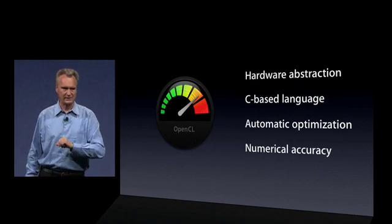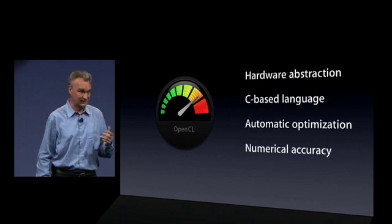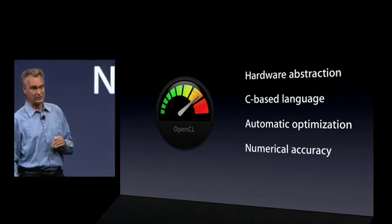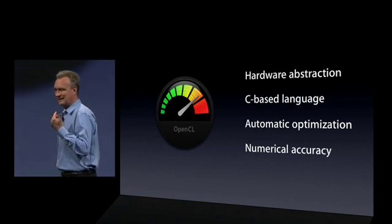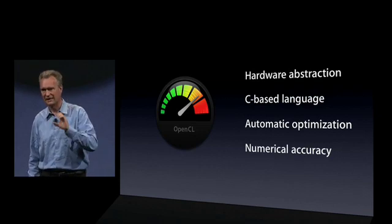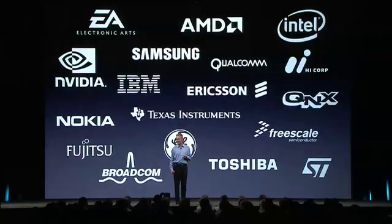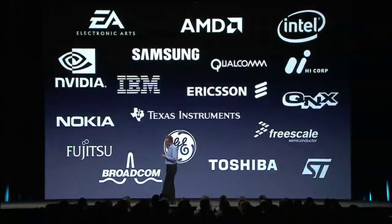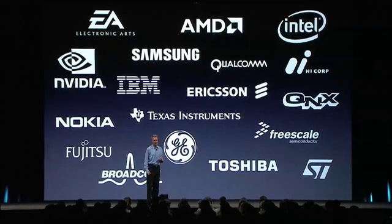OpenCL protects you as developers from exactly what card the user has. It's based on C, so there's a very low learning curve. It uses sophisticated compilation techniques to optimize, and it has numerical accuracy, which means you can use it for scientific computation. We've also decided to make it an open standard, and many companies are participating — in fact, all the top manufacturers of graphics chips are in. So that's OpenCL.